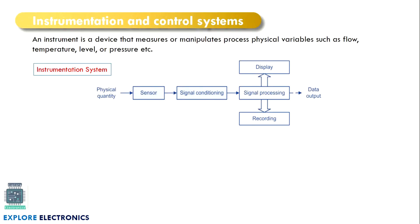First, let us understand what is an instrument. An instrument is a device that gives us the measure of some physical quantities such as liquid flow, temperature, level of some liquid, pressure, velocity, or speed. To measure these physical things we are going to use an instrument. We can call that instrument as an instrumentation system or we can call it as a measurement system.